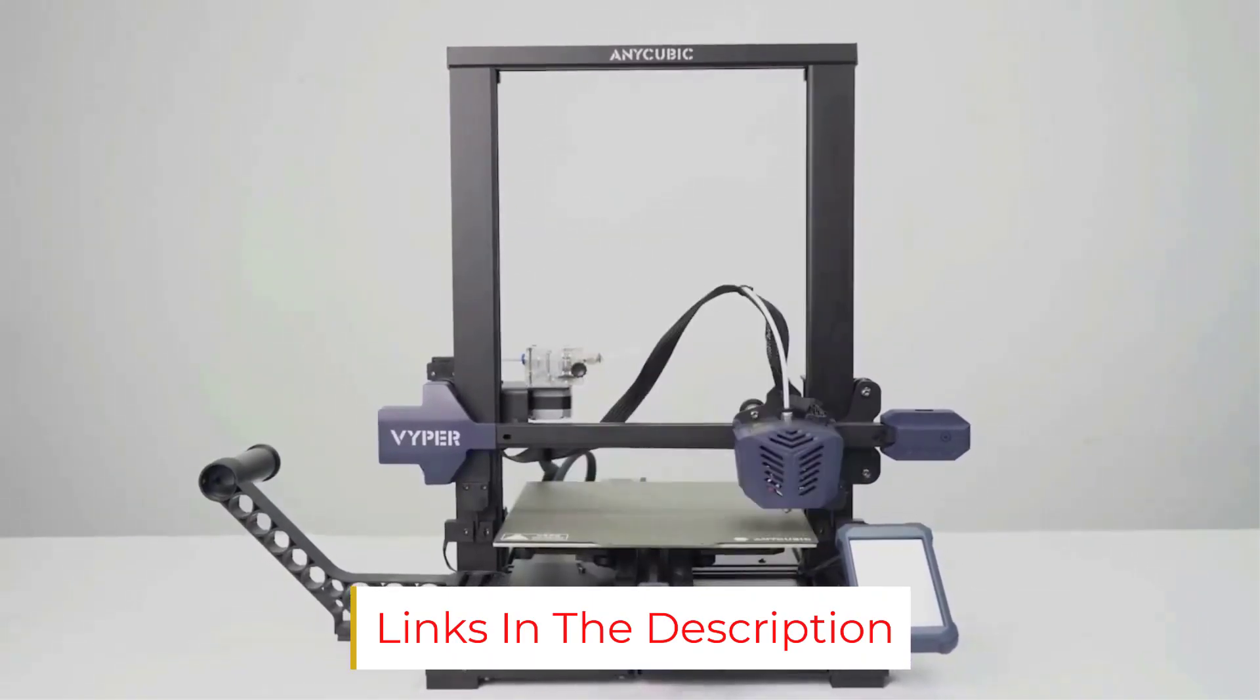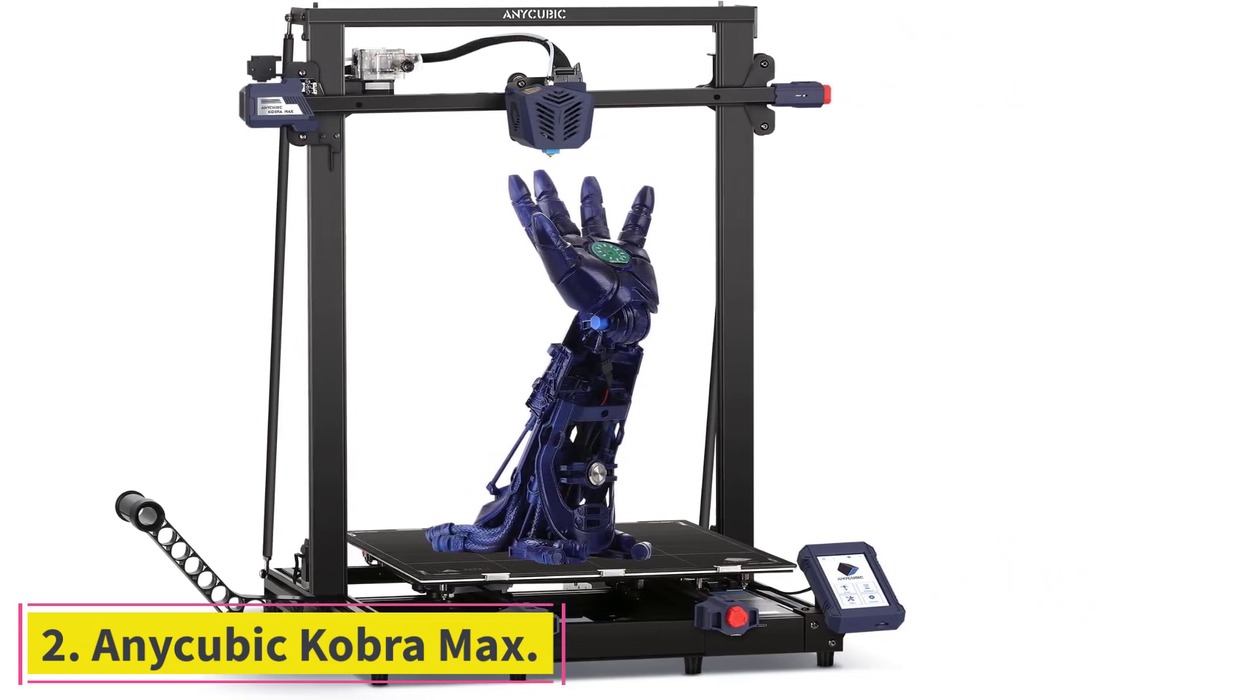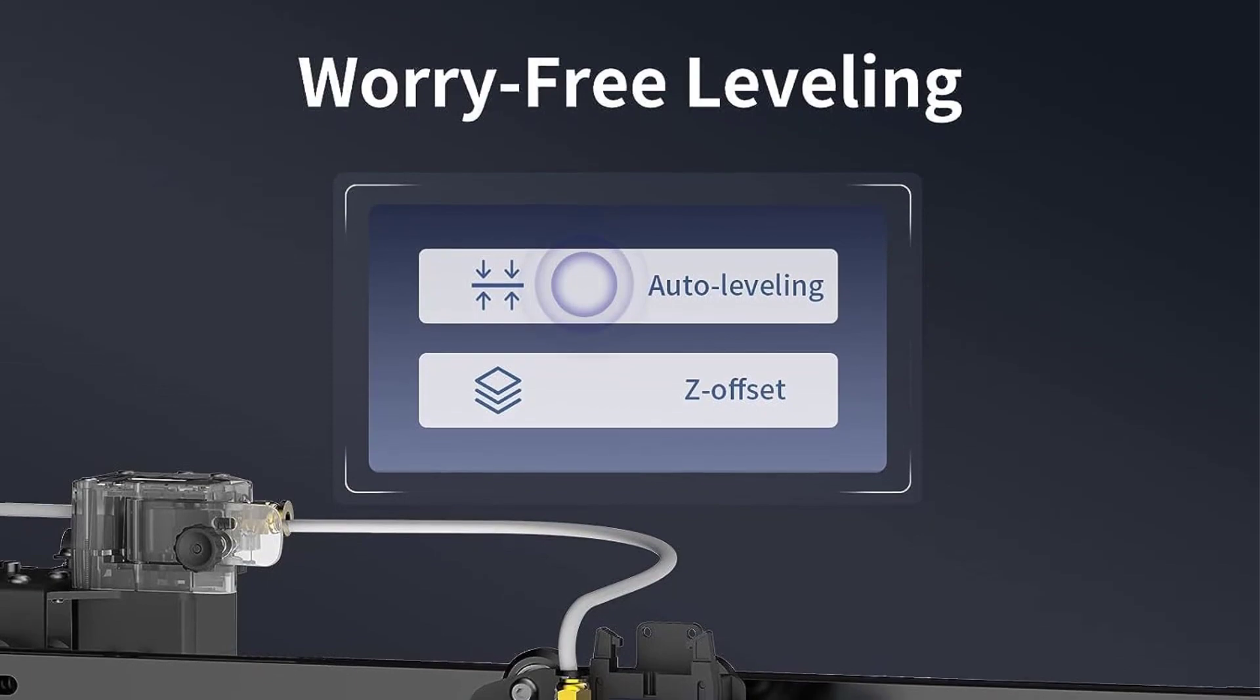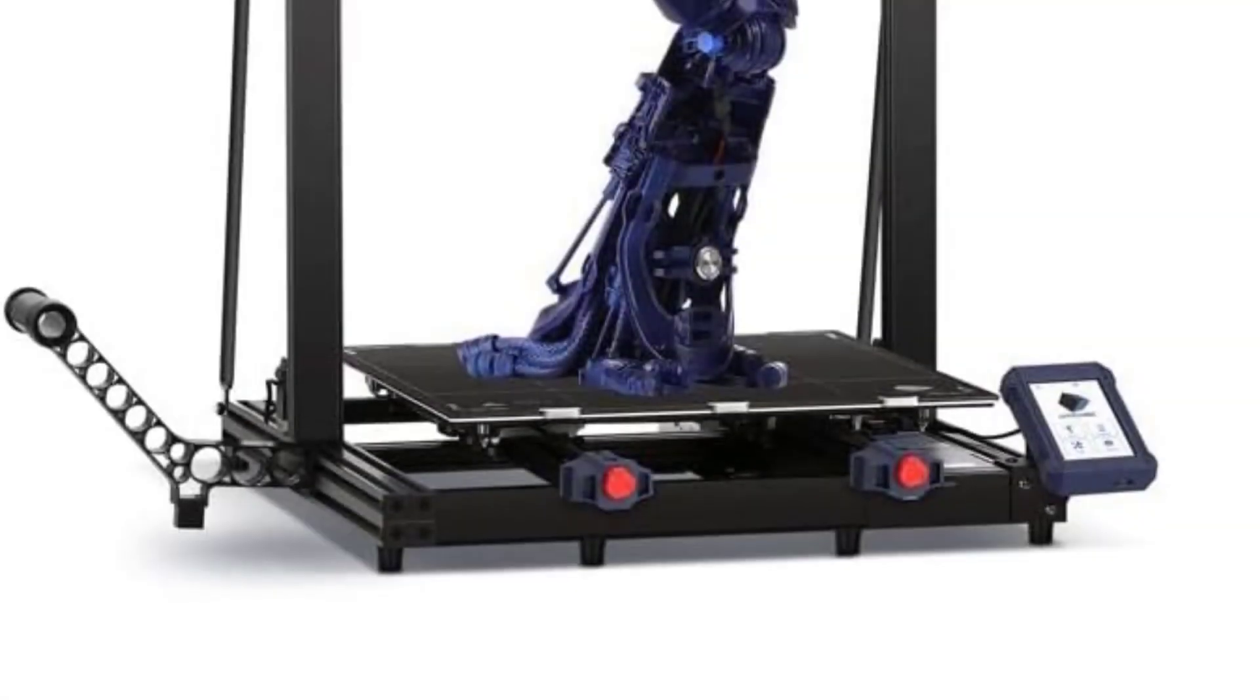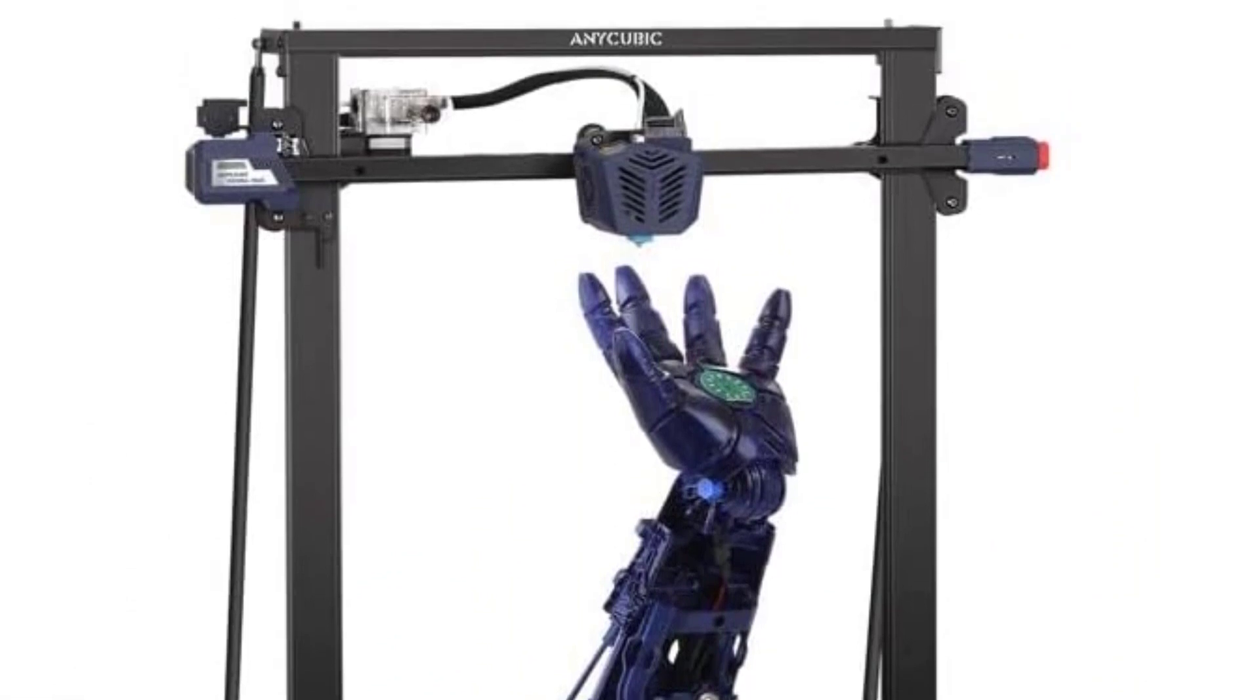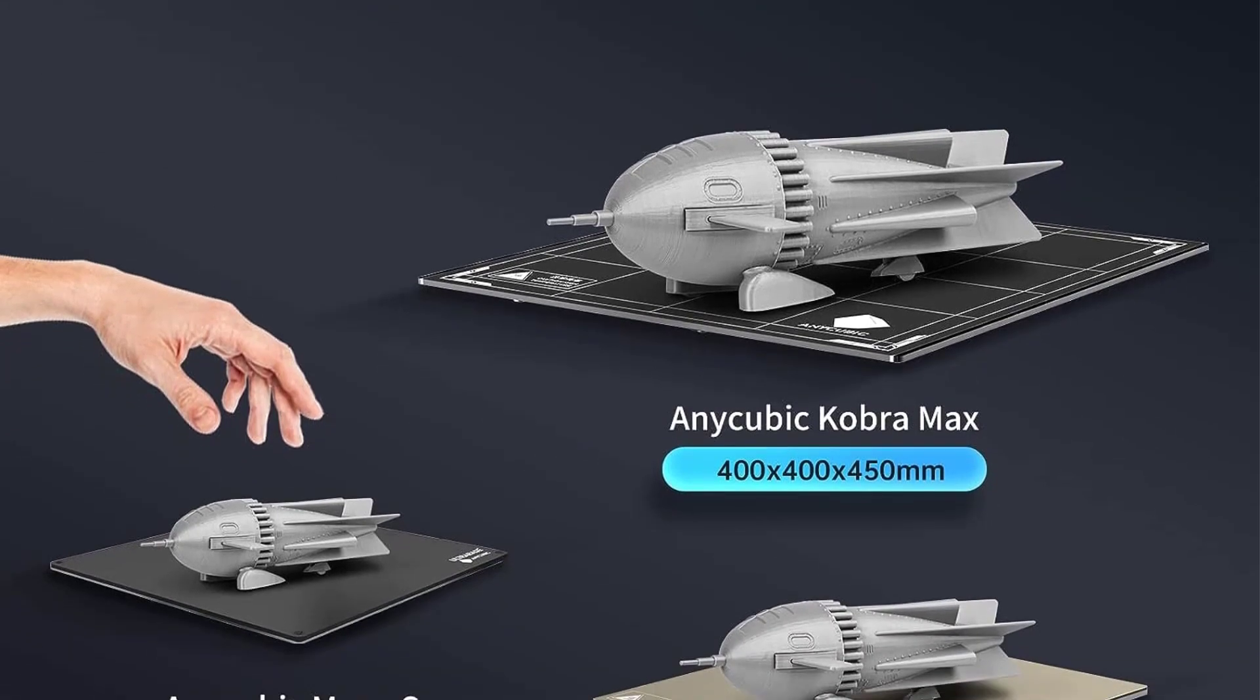At number two, Anycubic Cobra Max. Tom's Hardware adds this printer to its list and states the Anycubic Cobra Max is freaking huge. No really, it's that big. Once you find a spot to put it, the Anycubic Cobra Max is a great machine that's easy to use. It has an auto leveling system that physically taps the glass surface, giving very accurate results that can hang with any of the best 3D printers.